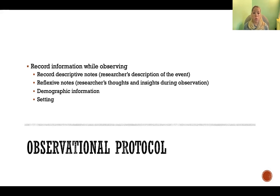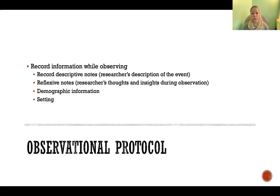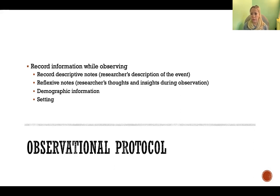Reflexive notes should be more about the researcher's thoughts, ideas, and insights that they might be having while they're observing that event. You should also take whatever notes you can about demographic information, if that is observable, and take notes about the setting. There may be notable features about the setting where the event is taking place, so make sure you are documenting those in case those notable features might have some effect on how the participants are behaving.